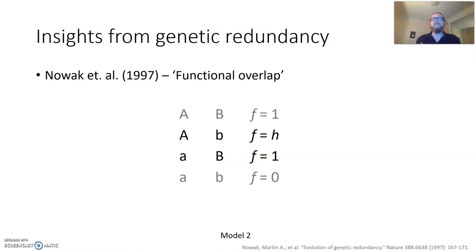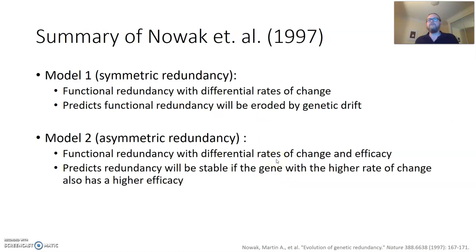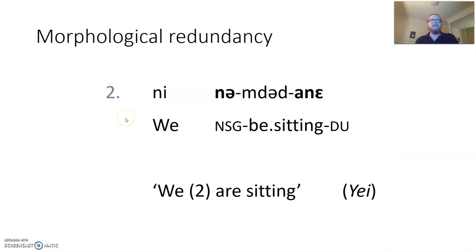However, they further show that in instances where you have both differentiating rates of change and differentiating efficacy — so that the more stable gene results in lower fitness — we end up with stable genetic redundancy, with a population retaining both genes A and B. To summarise, redundancy is typically eroded by genetic drift when we have differentiating rates of change, except in the specific circumstance where the element with the lower rate of change also has lower efficacy. This strikes me as compellingly similar to what we see in morphological redundancy in YAM languages.